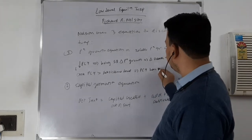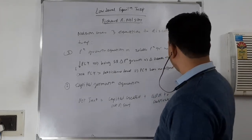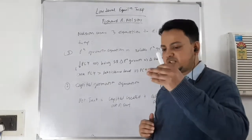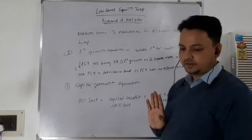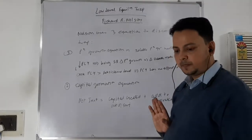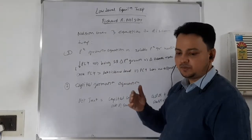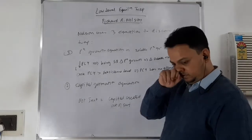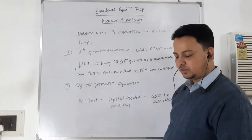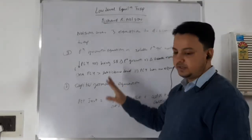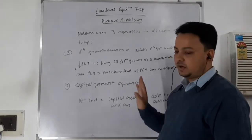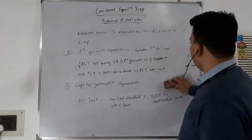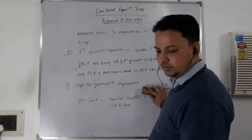If income is above subsistence level, I cannot associate the death rate with per capita income anymore — because if I'm getting more than my requirement for survival and some deaths are occurring, I cannot associate that with per capita income. With these three sets of relationships, we can see why an underdeveloped country is trapped in the Low-Level Equilibrium Trap.